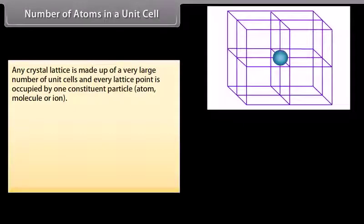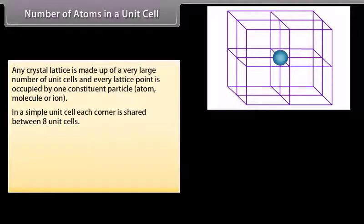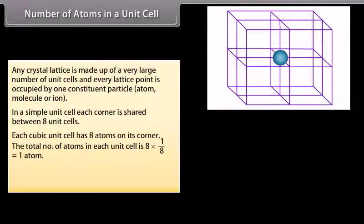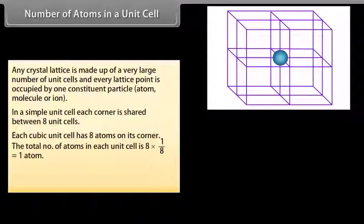Number of atoms in a unit cell: any crystal lattice is made up of a very large number of unit cells, and every lattice point is occupied by one constituent particle — atom, molecule, or ion. In a simple unit cell, each corner is shared between 8 unit cells. Each cubic unit cell has 8 atoms on its corners. The total number of atoms in each unit cell is 8 × (1/8), which equals 1 atom.